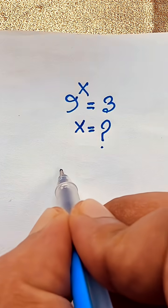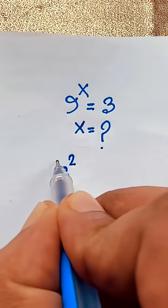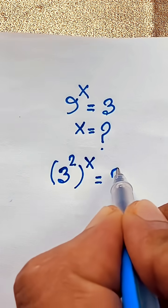So 9, it will be 3 to the power 2, bracket, power is x, is equal to 3.